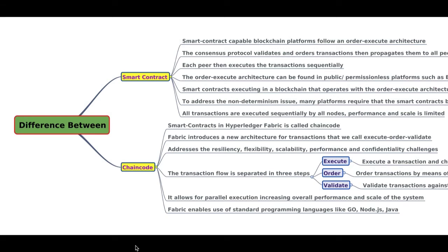Hey guys, welcome to this channel weekly and I'm Narek. In this video I'll be talking about the difference between a smart contract, which is normally used in other blockchain platforms, and the chaincode which is specific to Hyperledger Fabric. The mode would be by mind mapping and you can download this mind map from the link provided below in the description. Before we get into the business, subscribe to this channel and hit the bell icon so that you get updates of all the videos being uploaded.